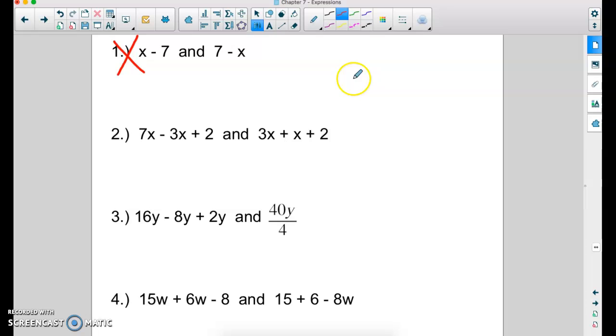Now that you've done the work in your notebook, let's check our answers. 7x minus 3x would be 4x. And then don't forget the plus 2. And then for our next expression, we have 3x plus x plus 2. And if we combine those like terms, we get 4x plus 2. So are these expressions equivalent to one another? The answer is yes, because when you combine the like terms, they equal the same thing.